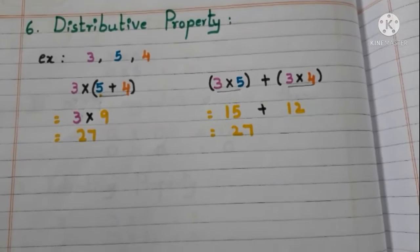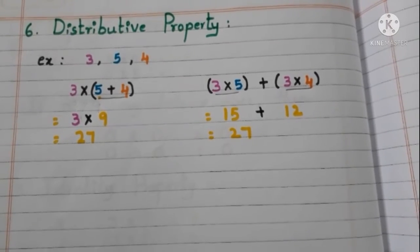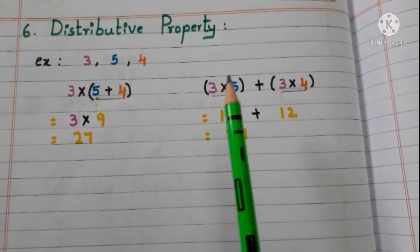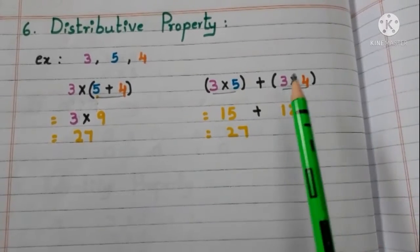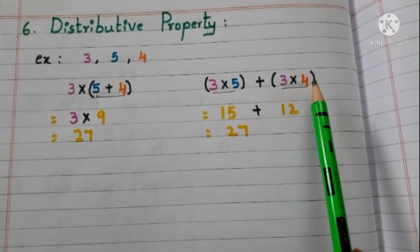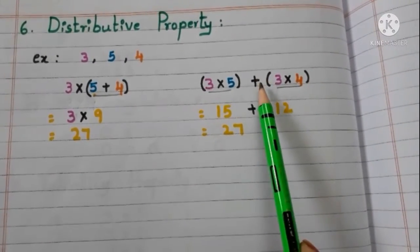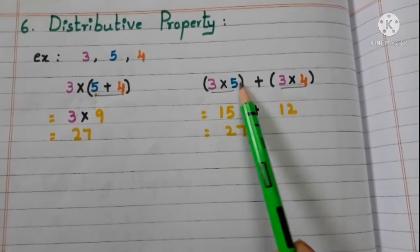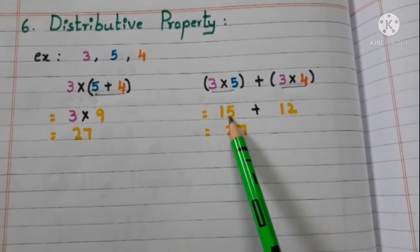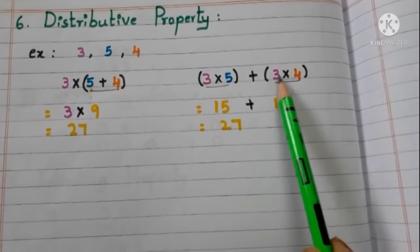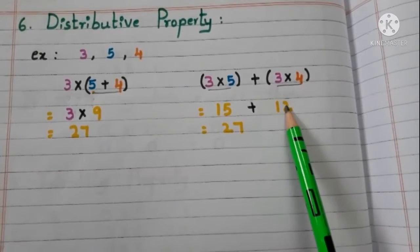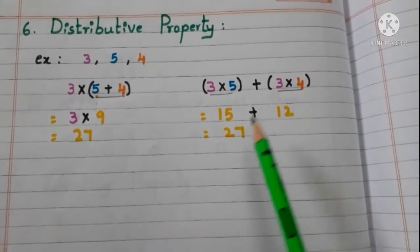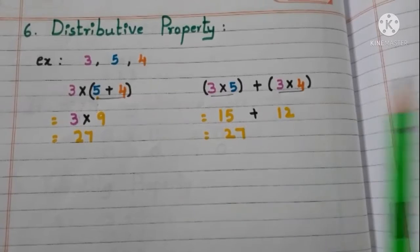Now, let us solve in another way. First, we multiply 3 and 5, and then 3 and 4. Then, we take the sum of these 2. 3 times 5 are 15, and 3 times 4 are 12. Now, add 15 and 12. We get the same answer 27.